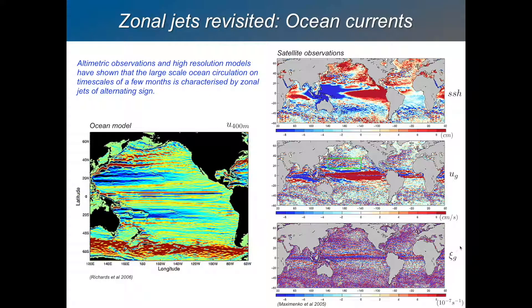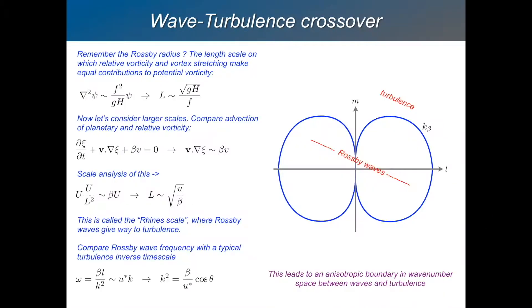There is some theory that goes with that. Let me take you back to the Rossby radius. The Rossby radius is the length scale on which you have a balance between the relative vorticity term and the vortex stretching term. It's the square root of g h over f, the wave speed divided by the Coriolis parameter.